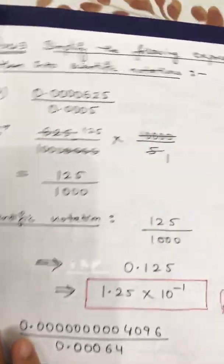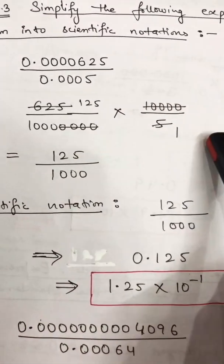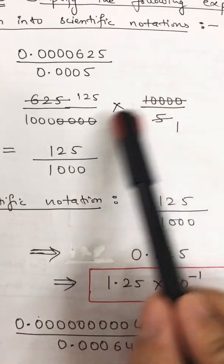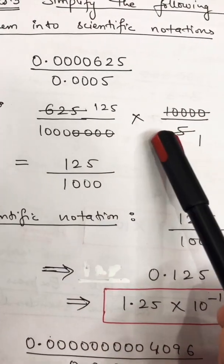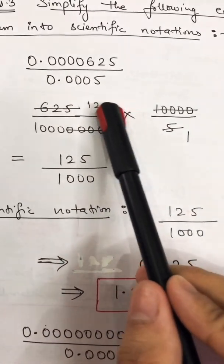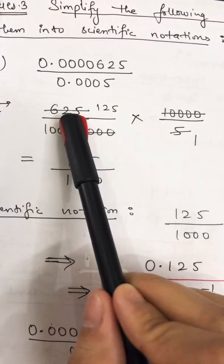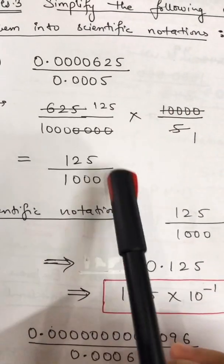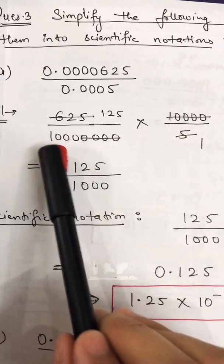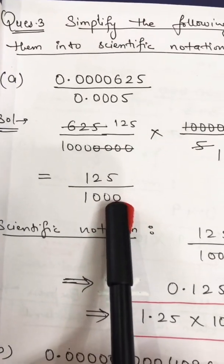This step is the main step — you have to do this in all parts of this first equation. Then go for cancelling. You can cancel four zeros from numerator and denominator. Then cancel 5 into 625: five ones of five, five twos ten, five fives twenty-five. So what is left: 125 in the numerator and 1000 in the denominator.